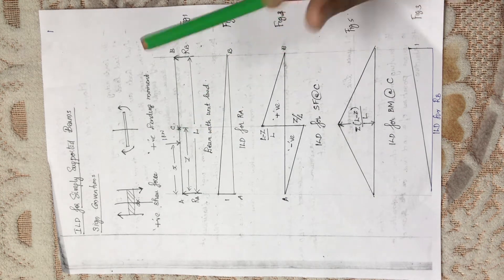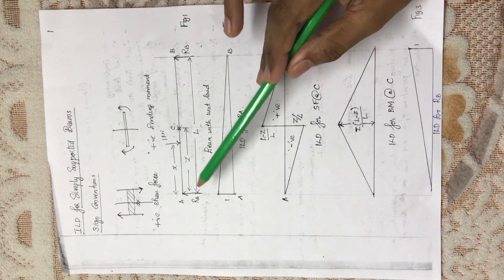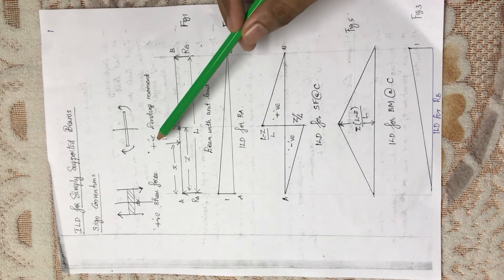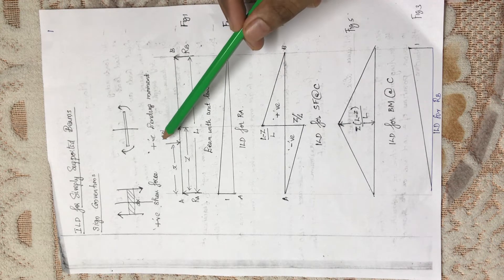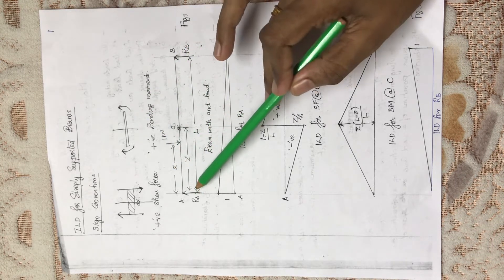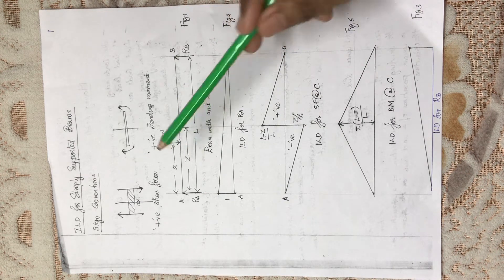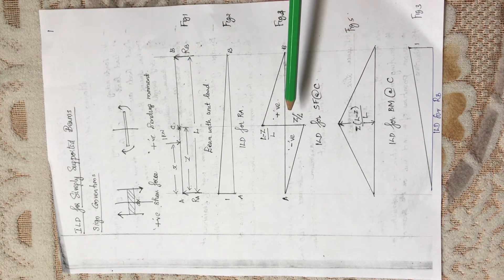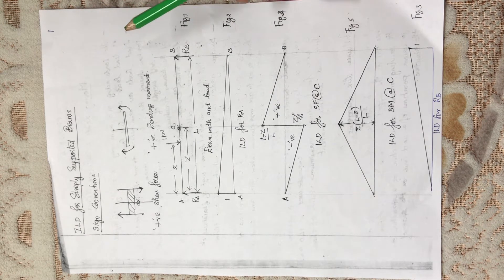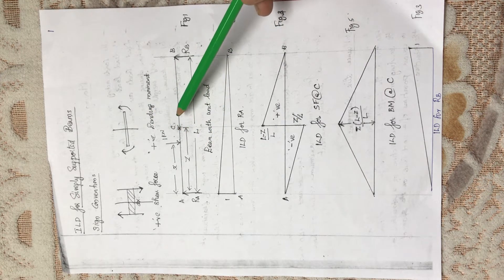Here is the question: we have a simply supported beam supported at end A and end B. This is Figure 1. There is a unit load of intensity 1 kN acting at a distance H from support A. Consider a section C at a distance Z from support A. We have to draw the influence line diagrams for RA, RB, the shear force at C, and the bending moment at C.